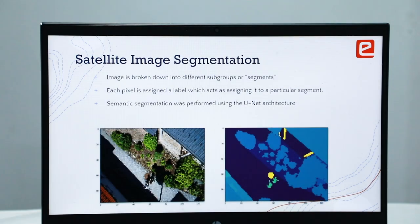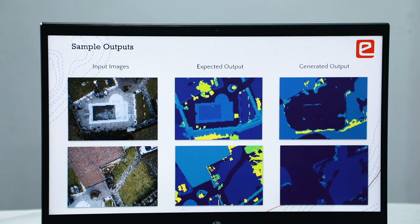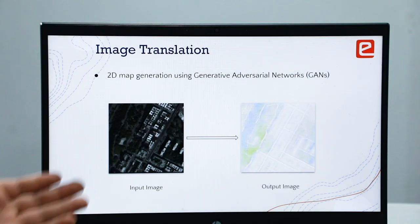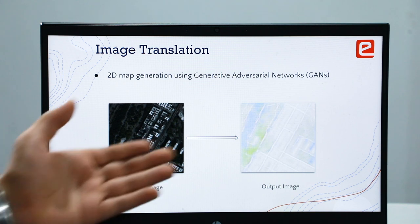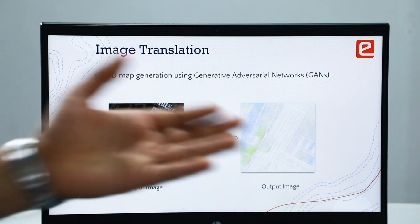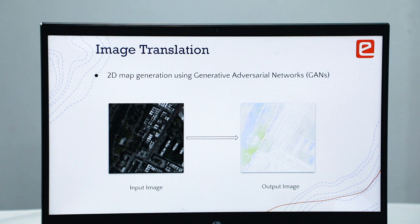In semantic segmentation, the image is broken down into different subgroups or segments based on the land cover of that particular area. This model utilizes the U-Net architecture. It converts an input satellite image into a 2D map which can then be converted into a vector or raster file used in commercially available mapping software such as Google Maps or OpenStreetMap.